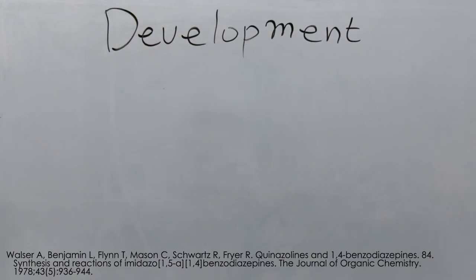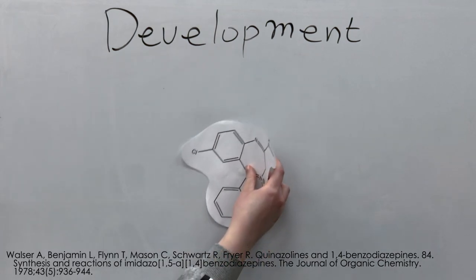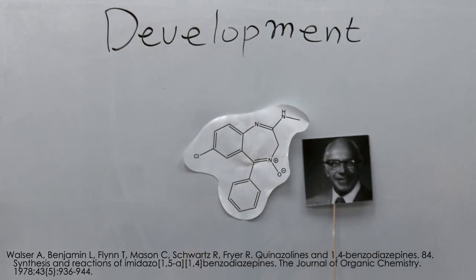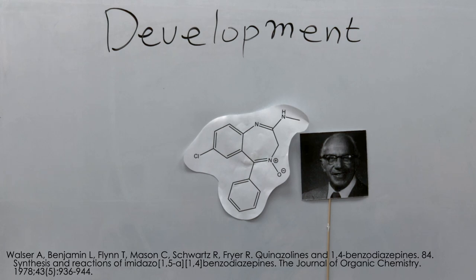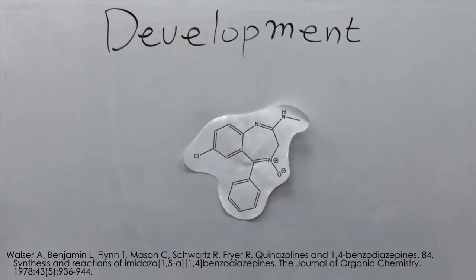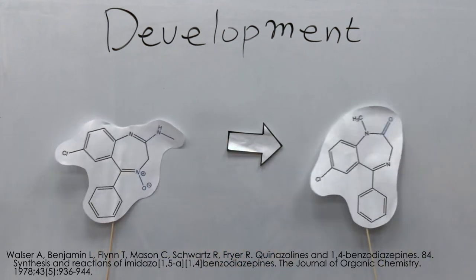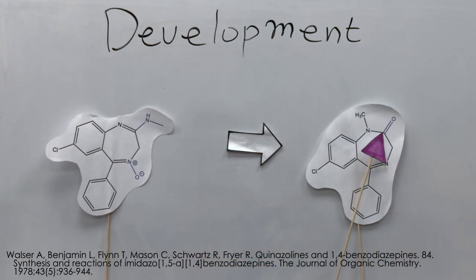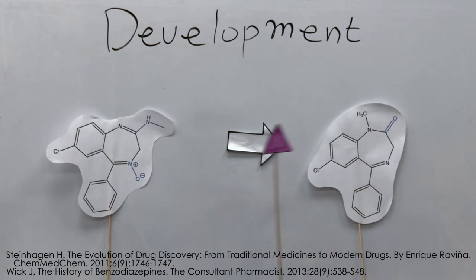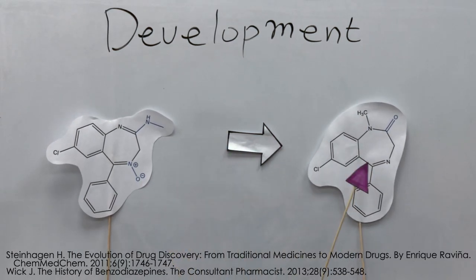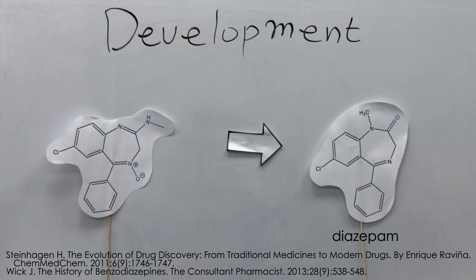The first benzodiazepine, chlordiazepoxide, was accidentally discovered by Dr. Sternbach and Dr. Reeder in 1955. In 1960, it was successfully marketed as Librium. After that, many benzodiazepine 2-one compounds were produced with the loss of the N-methyl group and oxidation at carbon-2. Further studies showed that the N-oxide group was unnecessary, leading to the development of diazepam, which is more potent and easier to synthesise.